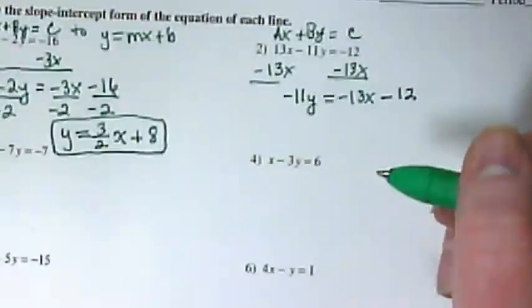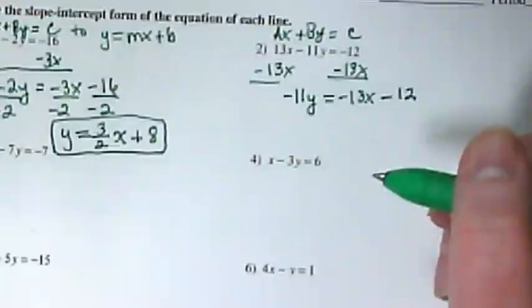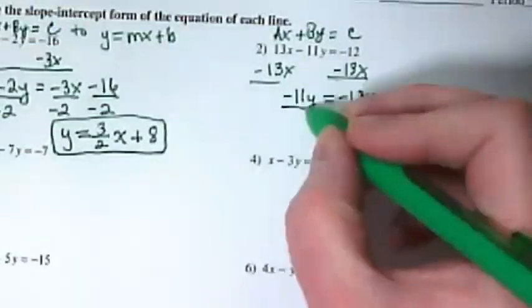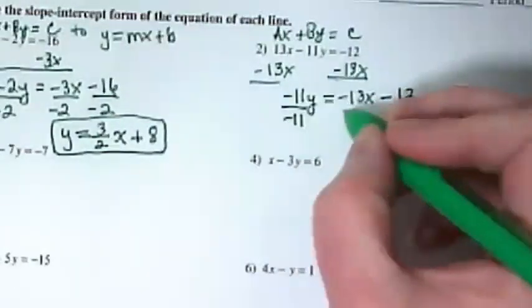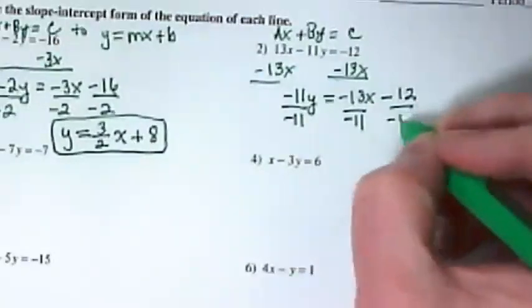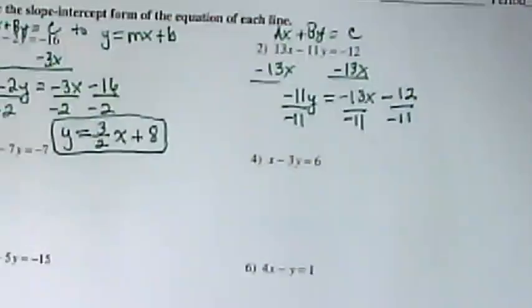And I can already tell this is not going to be an attractive looking equation at the end, because what am I dividing everything by? Negative 11 does not divide into very many numbers in a nice even way.